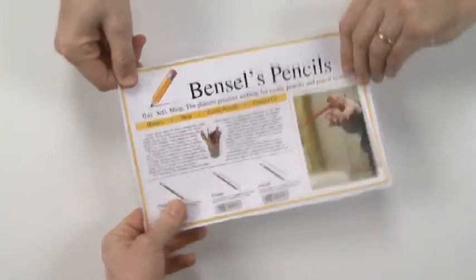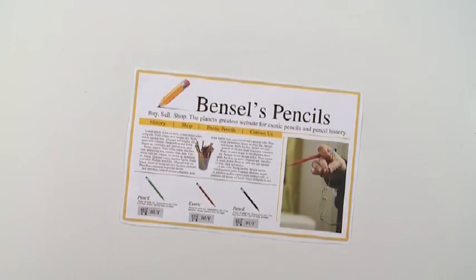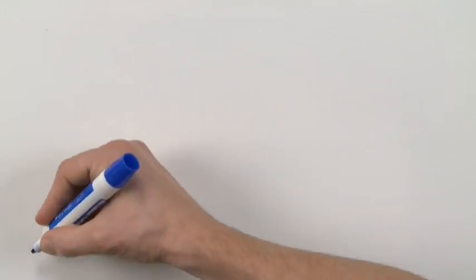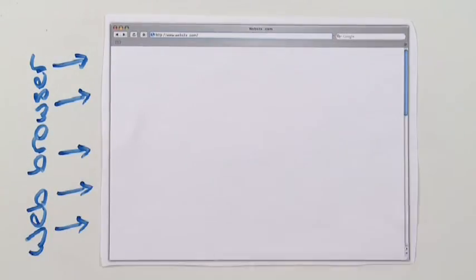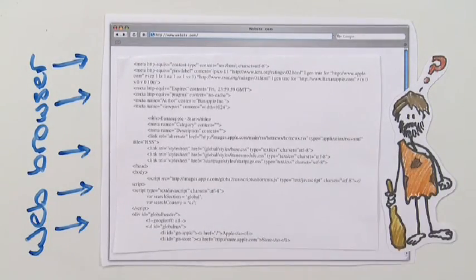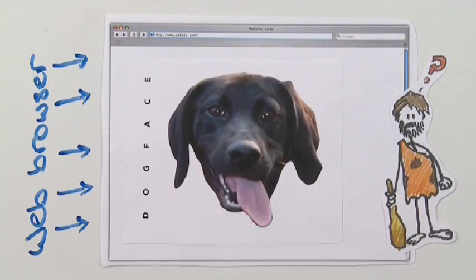There are several ways to go about it, but first, we need to understand how websites work. When you get right down to it, a web browser is simply a translation tool that converts the language, or code, of the Internet into words and pictures that humans can understand.